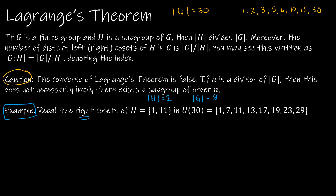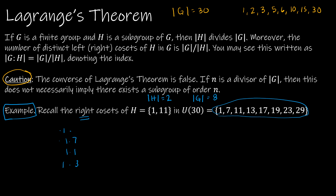When we computed all the right cosets — H·1, H·7, H·11, H·13, and so on for each element — we found that even though we got a product for all eight elements, there were only four distinct cosets. Lagrange's theorem tells us exactly how many there are: the index equals the order of G divided by the order of H, which is 8 divided by 2, giving us four distinct cosets.